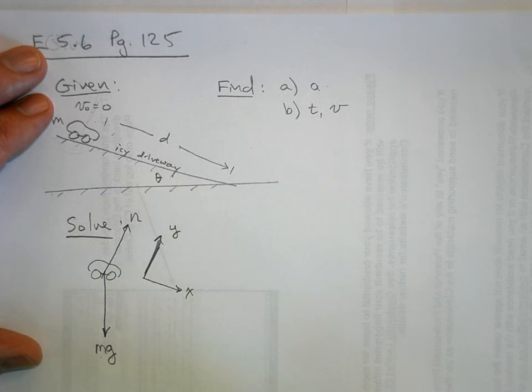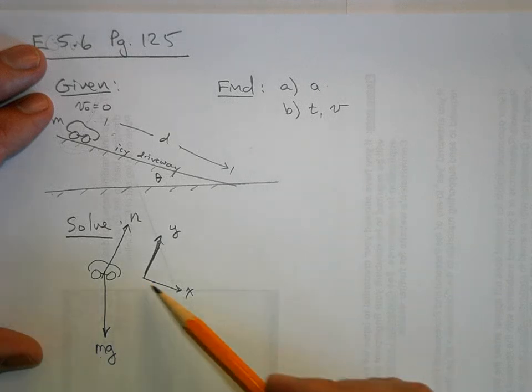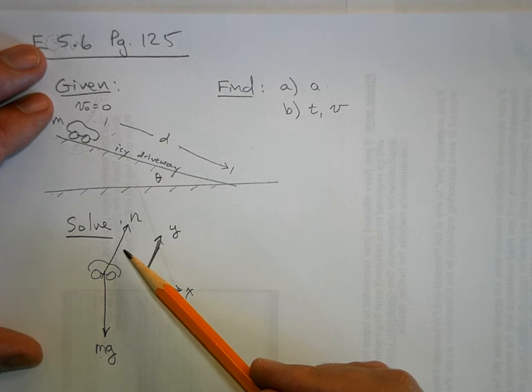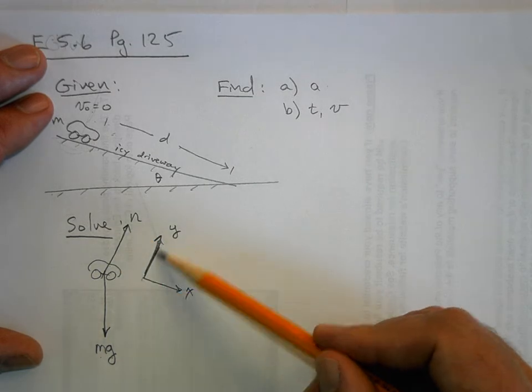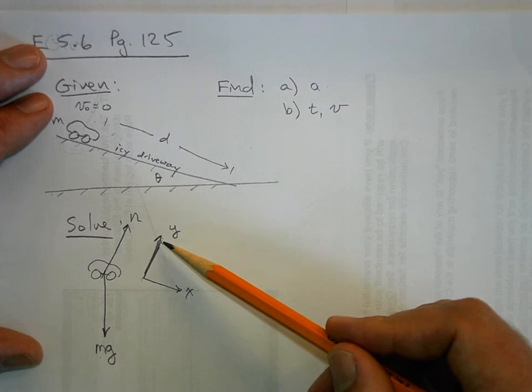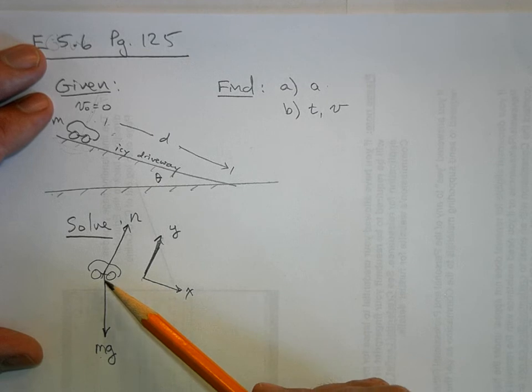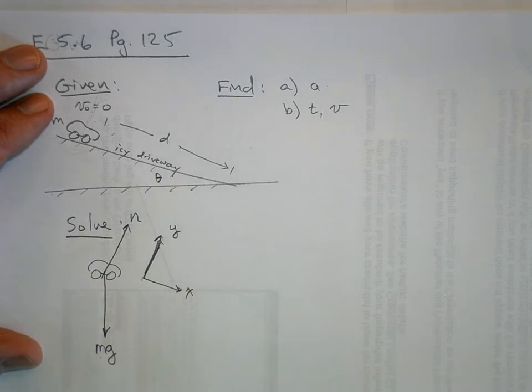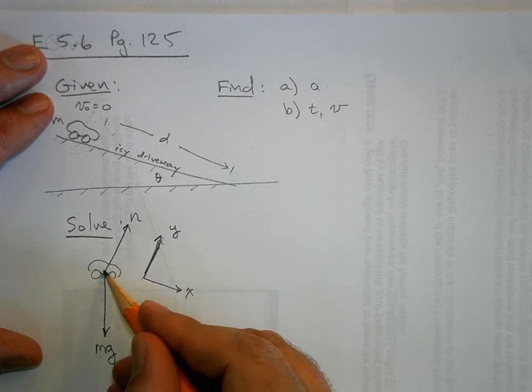Now I need to break up the forces into their components. But look at the normal force—the normal force is in the y direction, it has no x component. But now look at gravity. Gravity needs to be broken up into its components, and the components need to be in the y direction and the x direction. So here's gravity, and this is the component in the y direction.